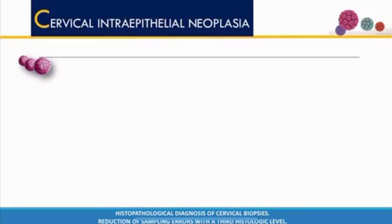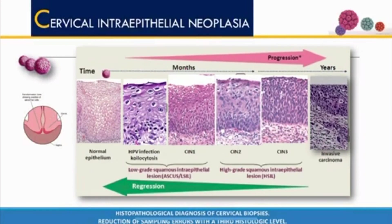HPV affects the normal cells of the epithelium, forming koilocytes. When the first layer of the epithelium is affected by pleomorphic cells, it is considered CIN 1. When it affects the second layer, it is CIN 2. In the third affected layer, it is CIN 3.